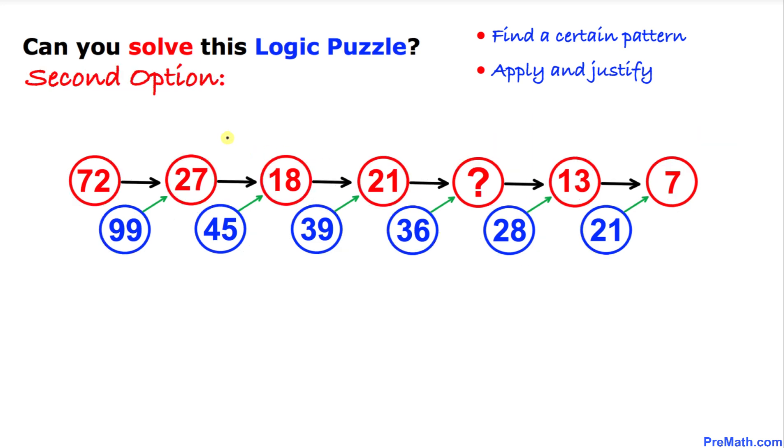Now this time we're going to take a little bit different approach. Here I'm going to share with you the second option. Let's look at these numbers. 72, let me add these ones: 7 plus 2. If you add these two numbers, that's going to give us 9. And here 9 plus 9 is going to give us 18. So I'm going to add 9 plus 18. If I add these numbers, I'm going to get indeed this number 27.